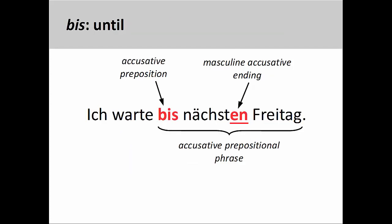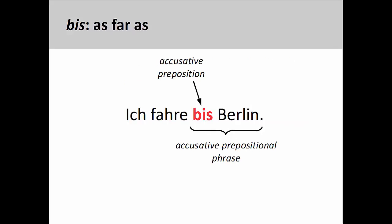Bis can be used to express 'until' or 'up to a certain point in time,' or 'by a certain point in time.' For example, 'Ich warte bis nächsten Freitag' — I will wait until next Friday. The masculine accusative ending on the adjective shows that everything between the preposition and its object is in the accusative case. Bis, meaning 'as far as,' is also used to express a distance up to a certain point.